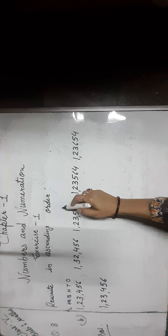Now compare the remaining numbers. The hundreds place digit is 5, 5, and 6. Five is smaller than 6. Now, the hundreds place digit is same in both remaining numbers, so we compare the tens place digit, that is 4 and 6. Four is smaller than 6, so we write 1,23,546. Then we write 1,23,564.